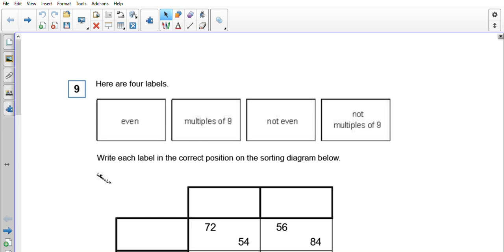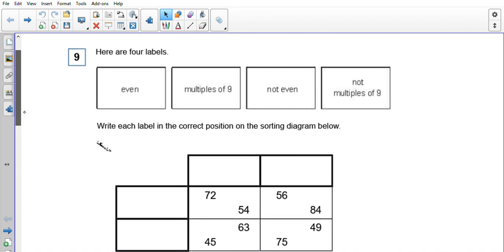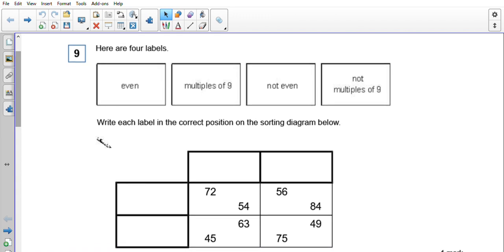Okay, we're going to have a look through just four of these questions today. We've started off with looking at a way of sorting our numbers, and this diagram we've got our four labels: even, multiples of 9, not even, and not multiples of 9.